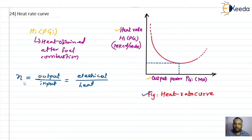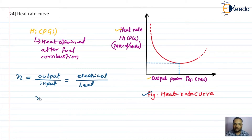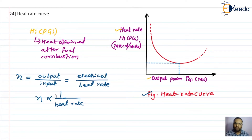The most efficient generator is the one where efficiency and heat rate are inversely proportional to each other. So lower the heat rate, more will be the efficiency. We can see that the efficiency of the generator is inversely proportional to the heat rate.